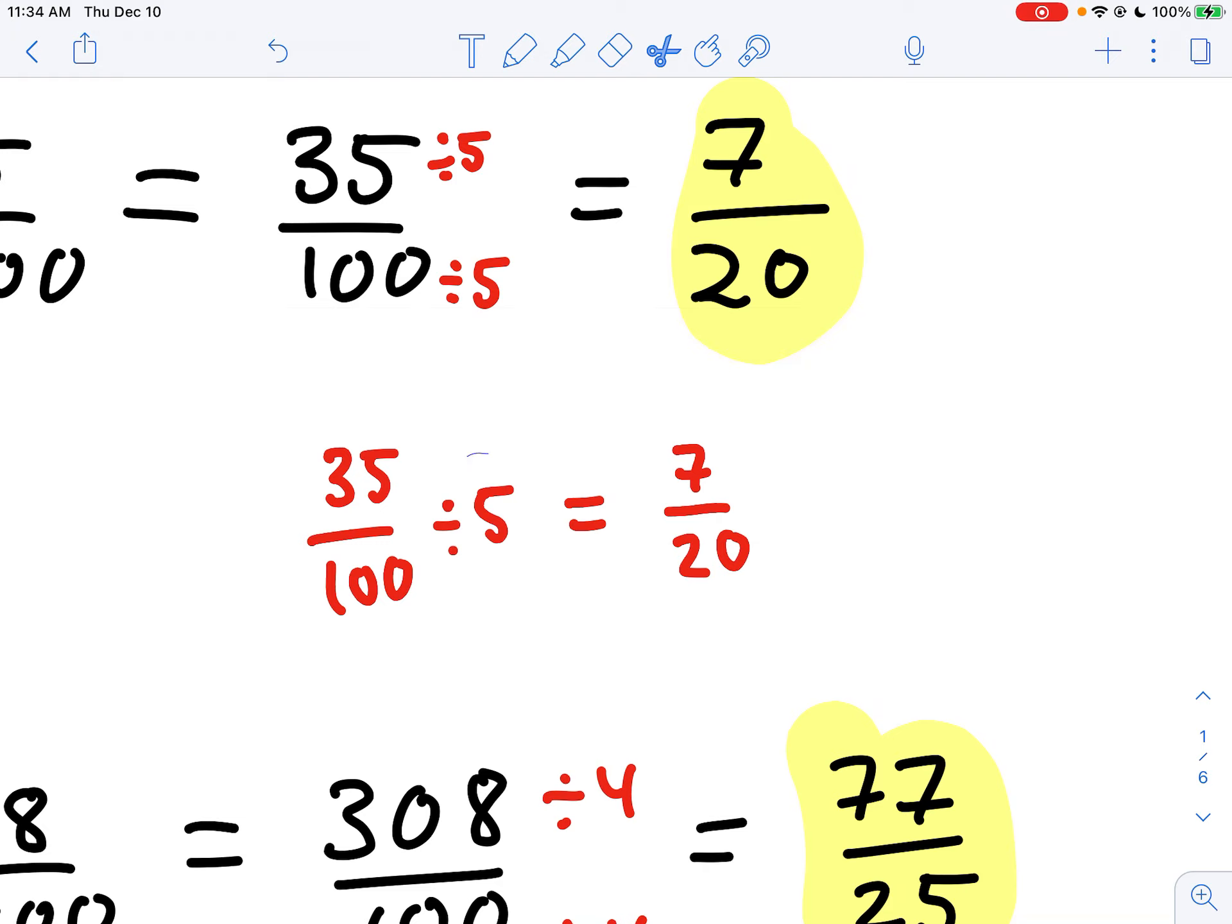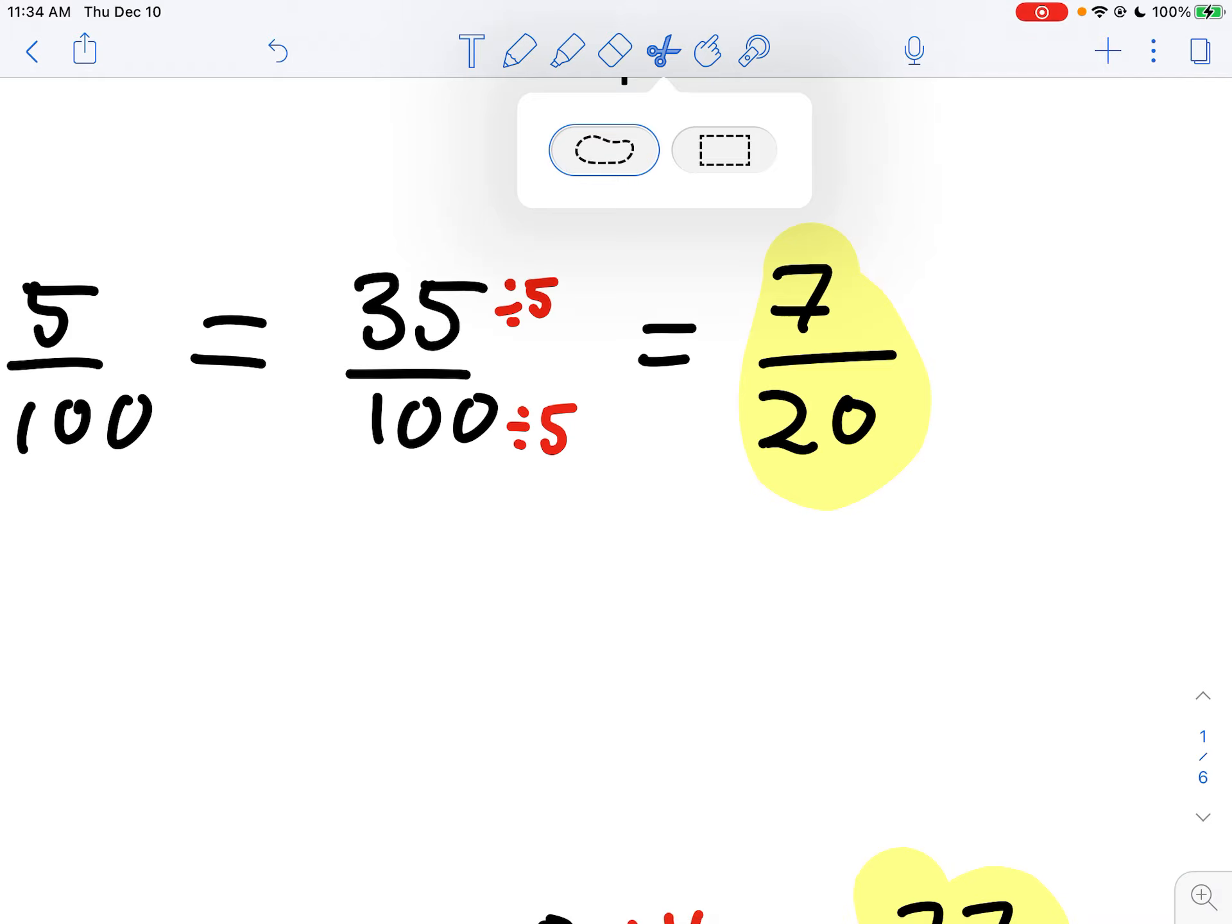So it's extremely confusing when you write a statement like this because it's technically a false statement. 35 hundredths divided by 5 is 7 hundredths, not 7 twentieths. So just make sure when you're altering the appearance of a fraction by writing one in equivalent form, that you're putting your times 5 or divide by 5 in both places there.